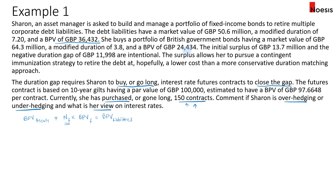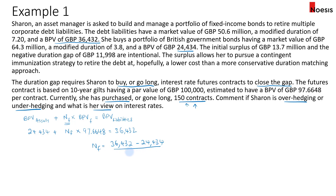The BPV of the assets is 24,434. We need to solve for the number of contracts. The BPV of each contract is 97.6648, and the BPV of the liabilities is 36,432. The number of contracts is calculated as 36,432 minus 24,434 divided by 97.6648, which gives us 122.85, rounding to the nearest whole number: 123 contracts.